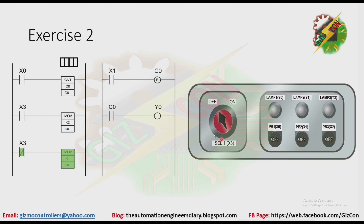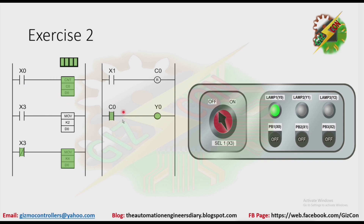Now that we turn off the selector switch, the value of D0 here will become 4. Because of that, the preset value of the counter here will become 4. Now let's press PB1: one, two, three, four. After 4 counts, the normally open contact of C0 here will be closed — that will make Y0 to turn on.